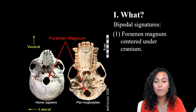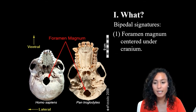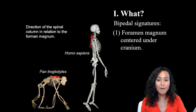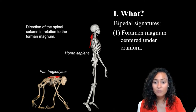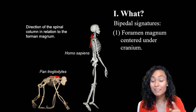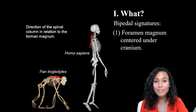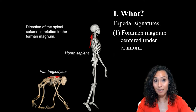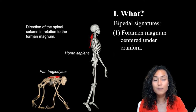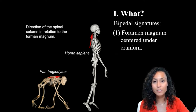The first big one is the placement of the foramen magnum, which is that large hole on the back of your cranium through which the spinal column passes. In quadrupeds, the spinal column runs parallel to the ground so that the foramen magnum is placed more towards the back of the skull. In bipeds, however, the spinal column runs perpendicular to the chin and the ground to keep us upright, so the foramen magnum is located more towards the bottom of the cranium.